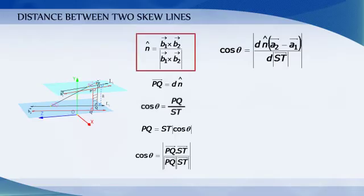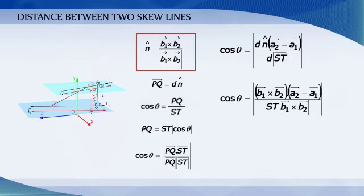Substituting the value of unit vector N, we get cos theta is equal to modulus of B1 cross B2 vectors dot vector A2 minus vector A1 divided by ST times modulus of B1 cross B2.